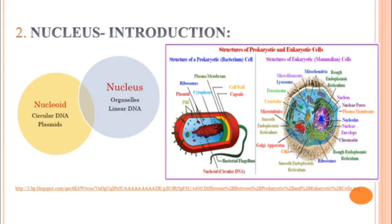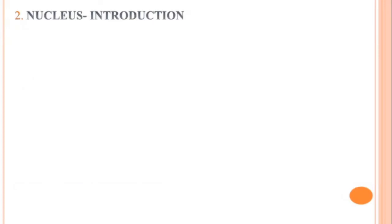Living creatures are described into two different types. Those with circular DNA and plasmids — known as nucleoid — are called prokaryotes. Those with a definite nucleus, meaning a nuclear membrane around linear DNA and membranous cell organelles, are named eukaryotic cells. You can view the image here — one is a bacterium and another is a eukaryotic mammalian cell.